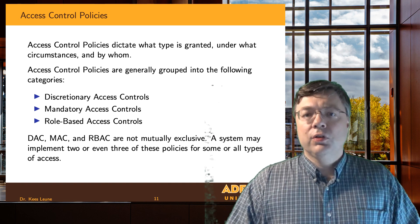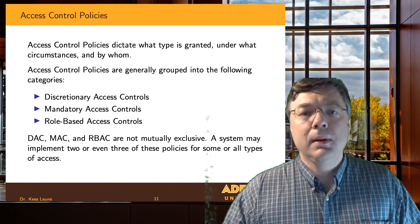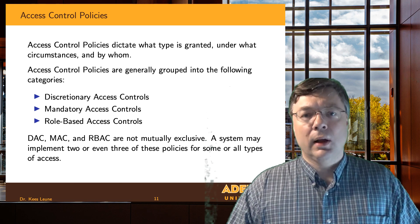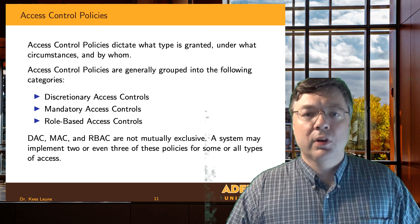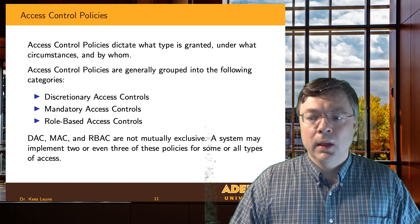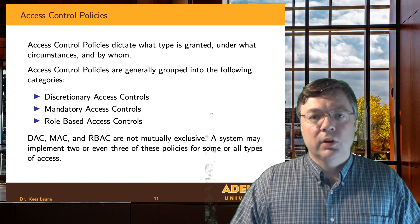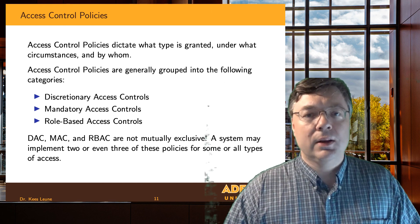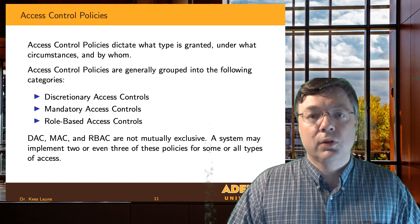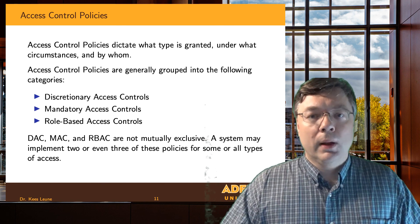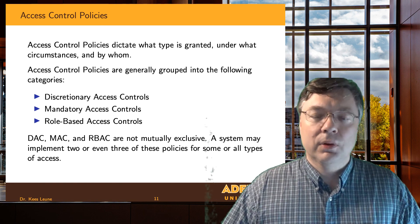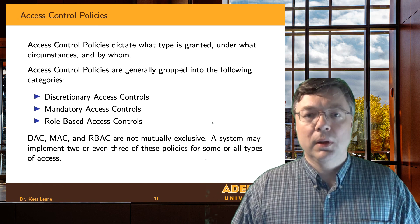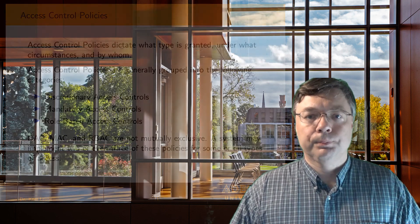There are many ways to specify access controls, but the three main approaches are discretionary access control, mandatory access control, and role-based access control. Each one has variations and each can be used together. In future videos we'll explore each of these three and figure out their benefits and drawbacks. You have likely encountered each of the three already, even if you don't know it yet. For now, let's figure out in the upcoming videos what those access control models mean, what their benefits are, and what their drawbacks are.